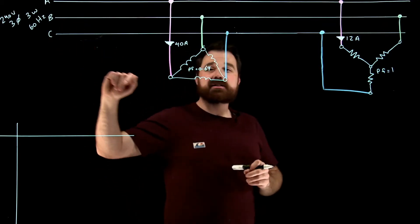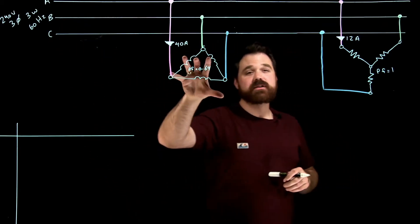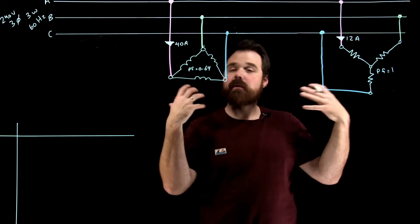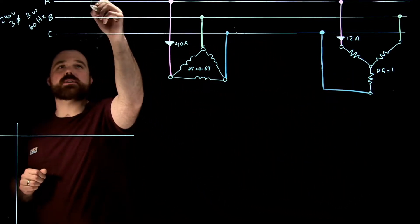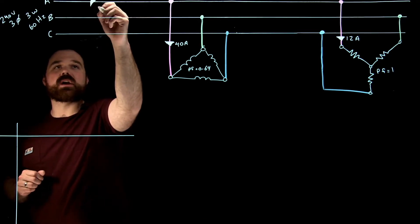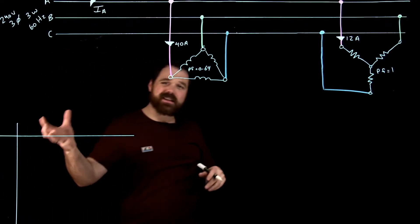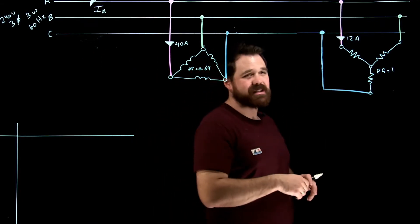And now connected to that source is a delta load and a Y load. So we have both of those loads. And what we're really going to look at and talk about is we want to calculate what is my main line current going into all of these loads.